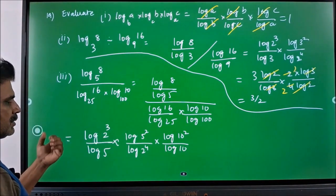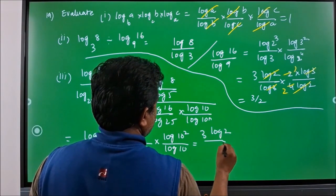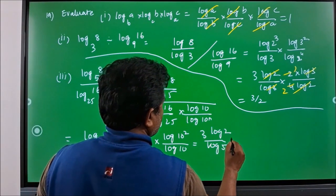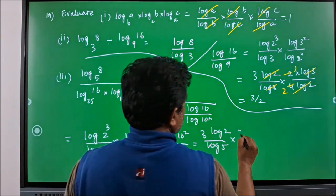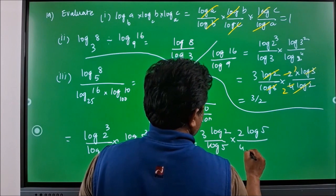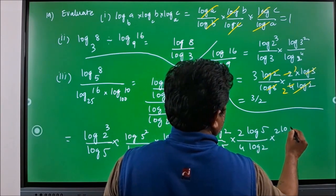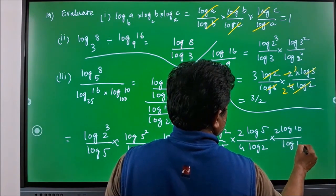If you bring the powers to the front you will have 3 log 2 divided by log 5 into 2 log 5 divided by 4 log 2 into 2 log 10 divided by log 10.